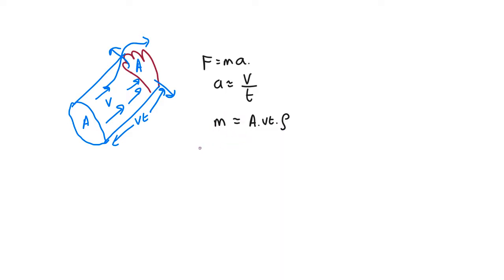So combining these, we work out that the force is equal to the mass—cross-sectional area times vt times the density—times acceleration, which is v over t. Now we see the times cancel, which is good. So this is a nice general equation; it's not dependent whether we're using it for a second or a millisecond or something. So it comes out in this particular case as the cross-sectional area times the density times the velocity squared.